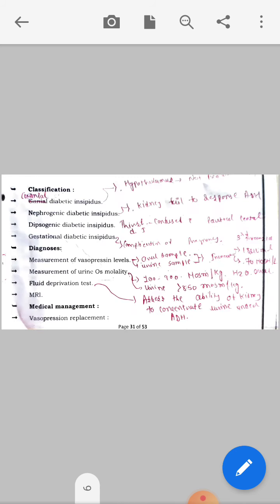Next is classification. Mainly there are four types of classification in diabetes insipidus. First one is cranial diabetic insipidus. Second is nephrogenic. Third one is dipsogenic. And fourth one is gestational diabetes.